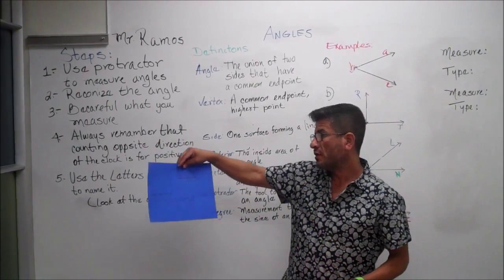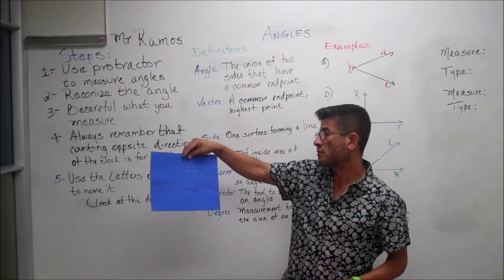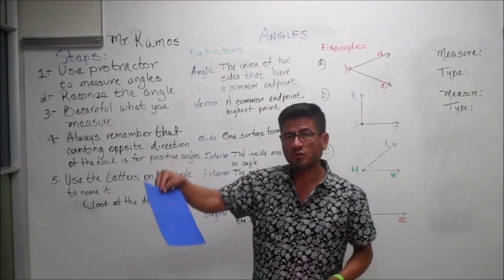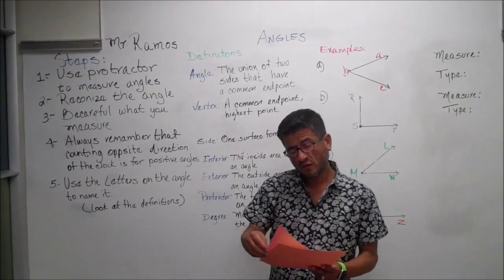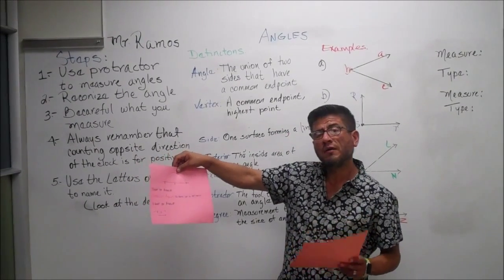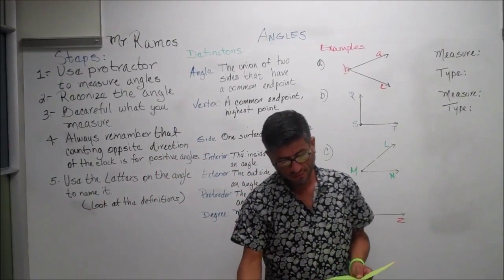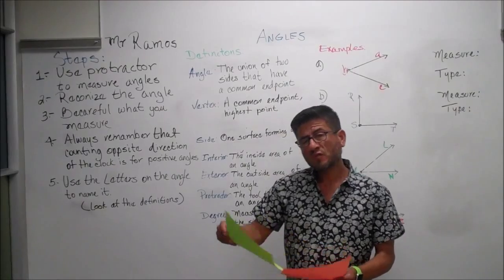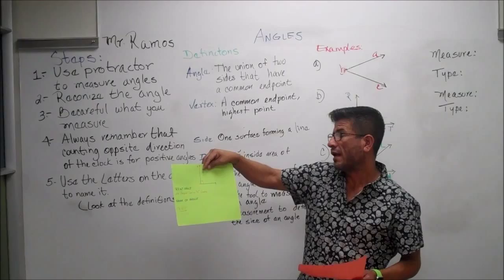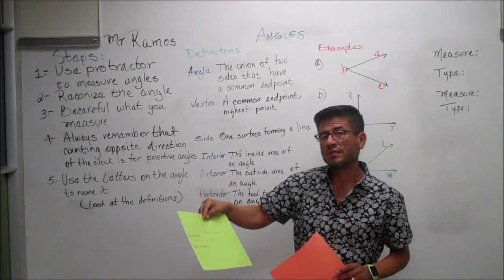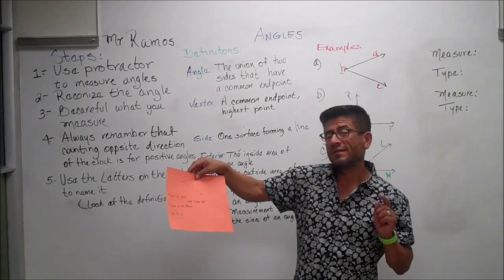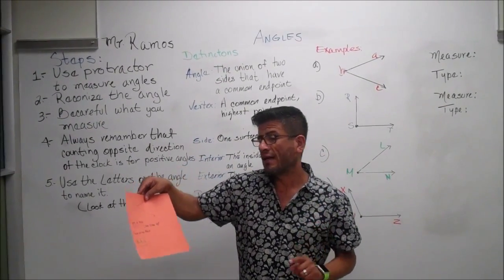Next one is the full rotation: it's an angle that is 360 degrees, a full circle. Next one is straight angle: it's an angle that is 180 degrees exactly. Next one is right angle: it's an angle that is 90 degrees exactly. And the last one is acute: it's an angle that is less than 90 degrees.